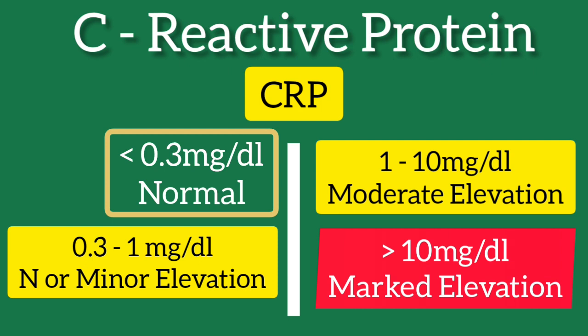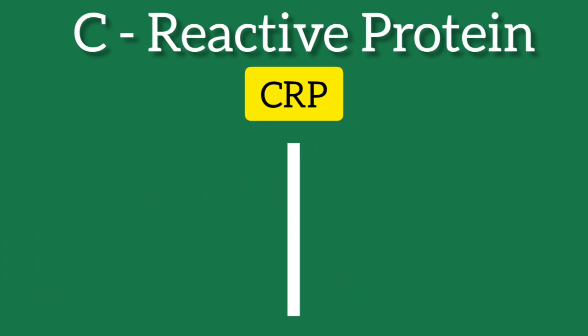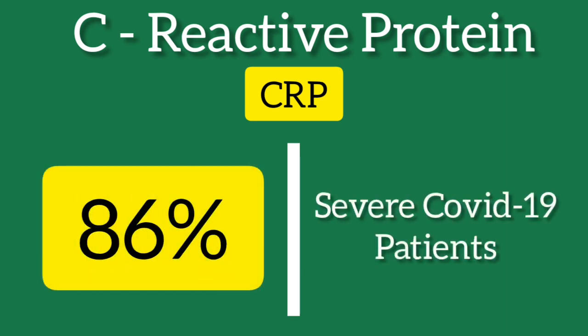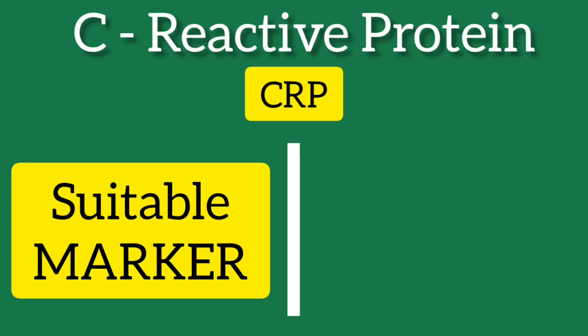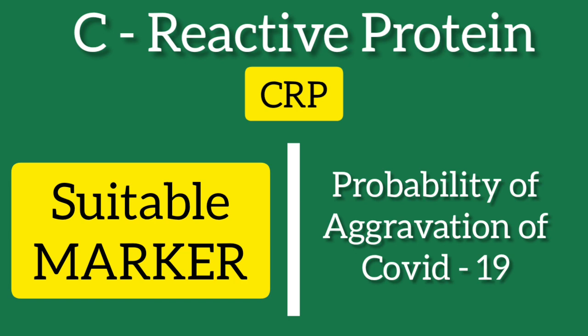C-reactive protein has been found as an important marker that changes significantly in severe patients with COVID-19. A significant increase of CRP was found in patients with COVID-19, with elevated levels observed in up to 86% of severe COVID-19 patients. A significant association was observed between CRP concentrations and the aggravation of non-severe patients. Some authors proposed CRP as a suitable marker for anticipating aggravation probability, noting that the risk of developing severe events increases by 5% for every one unit increase in CRP concentration.